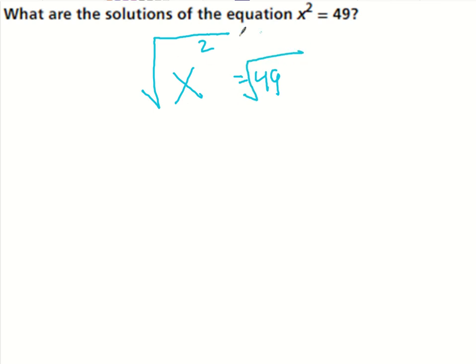and whatever I do on one side, I have to do on the other side. So this square root cancels out this power of 2, and I get x equals 7. However, because it's a square root, the square root could also be negative, because negative 7 times negative 7 does equal 49. So x is equal to positive or negative 7. So those are my two solutions for this particular quadratic function.